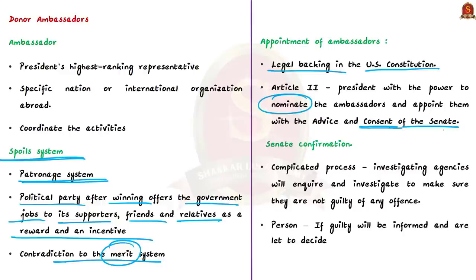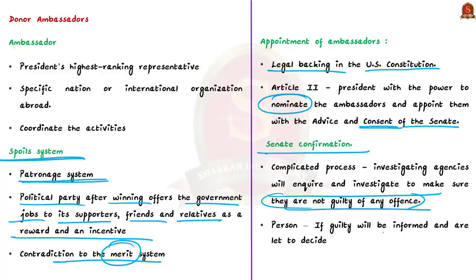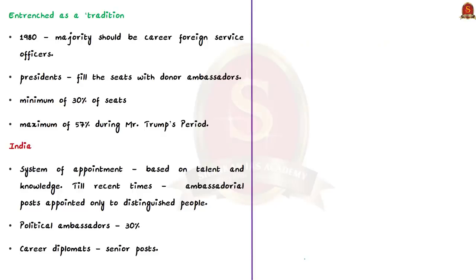Even though donor ambassadors pay large sums, the Senate confirmation process makes it difficult to acquire the position, as an investigating agency thoroughly enquires into the candidate's past. If found guilty, the candidate is given the choice to face charges or quietly withdraw. Back in 1980, it was decided that the majority of ambassadors should be career foreign service officers; however, successive presidents continued filling seats with donor ambassadors — who occupied around 30% of seats, reaching a maximum of 50% during Trump's period — making this an entrenched tradition in US history.